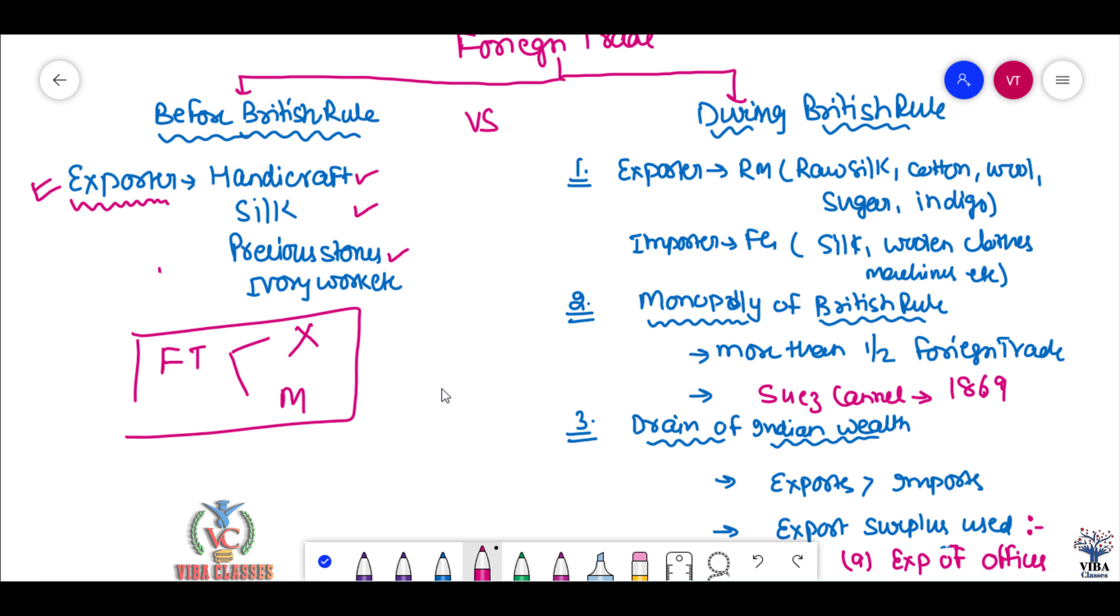During British rule, we were exporters of raw materials and importers of finished goods. This is our foreign trade. We were exporting and importing, but we didn't have a choice. We were exporting raw materials: raw silk, cotton, wool, sugar, indigo, all these things.